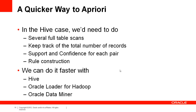The previous query only gets us a pair frequency. In order to implement the a priori algorithm, we would need to do a number of full table scans, keep track of the total number of records, and compute support and confidence for each record. However, we can quickly get our association rules using Hive, Oracle Loader for Hadoop, and Oracle Data Miner.